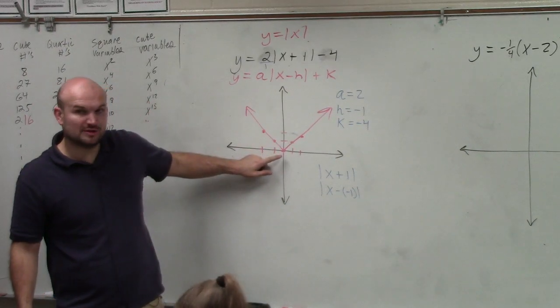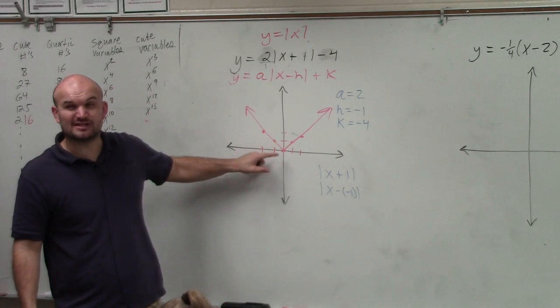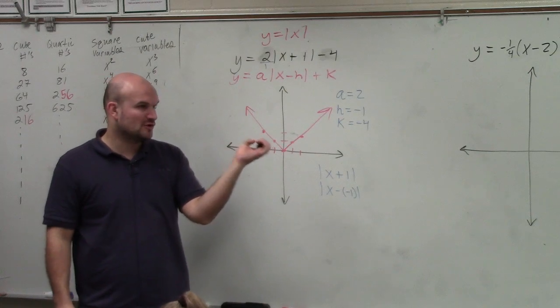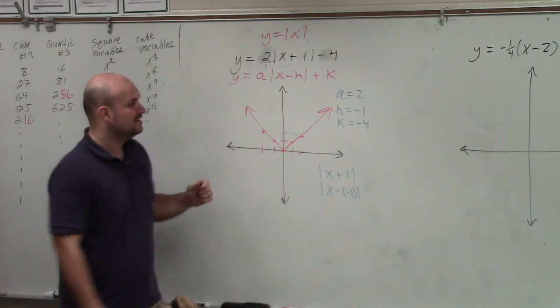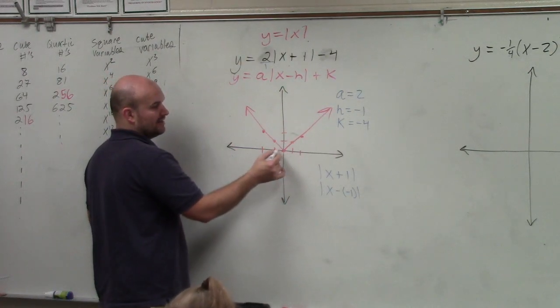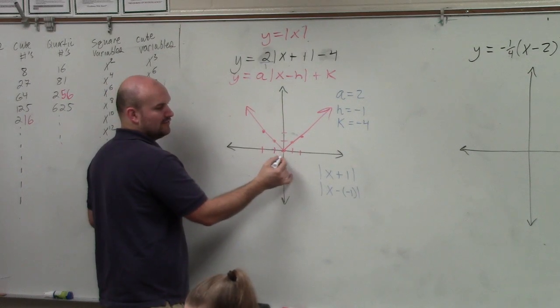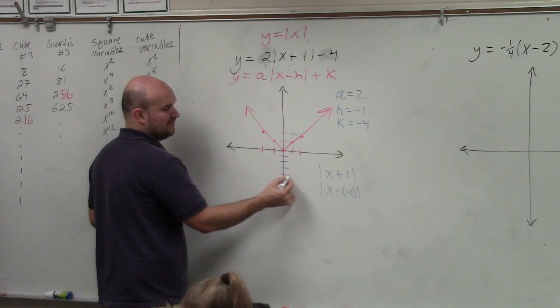So if you guys remember, when we're looking at this, we have the vertex, which is at 0, 0. I call that kind of like our focus point. That's what we're going to want to shift. So if h is negative 1, we're going to go left 1. If k is negative 4, we're going to go down 4: 1, 2, 3, 4.